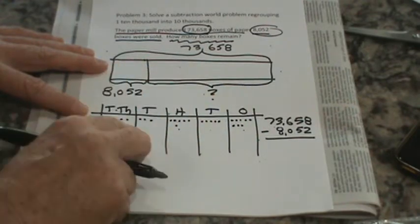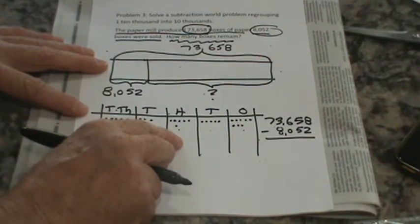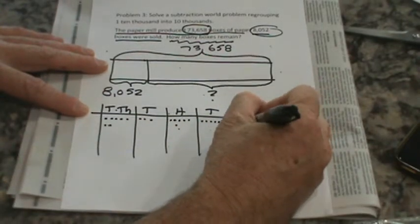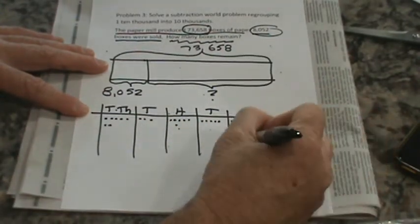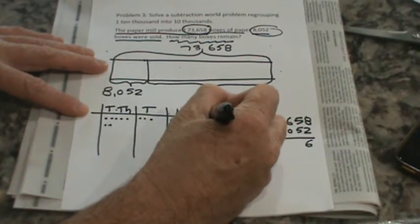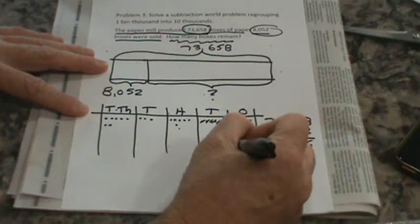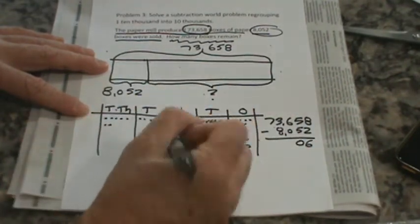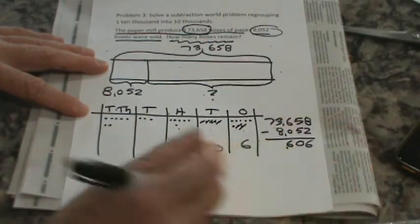Okay, seventy-three thousand six hundred fifty-eight. Eight minus two - less is six. Five minus five - we took away zero. Zero. Six minus zero stays six. Comma there.